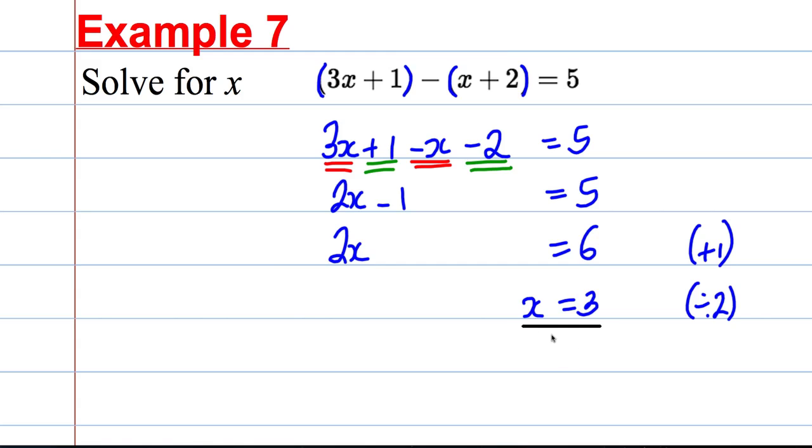And we would check. 3 times 3 is 9 plus 1 is 10. 3 plus 2 is 5. 10 take away 5 is indeed 5 as we were looking for. So we know we've done it right and we've checked it.